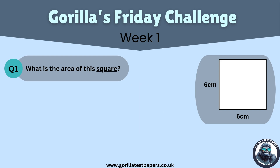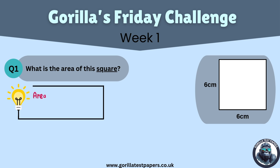Let's get started. First we need to know the equation for area — this will be the first top tip of the week. The equation for area is: area equals length multiplied by width, abbreviated as A = L × W. We then want to use this equation and fill in our length and width using the dimensions shown on the diagram.